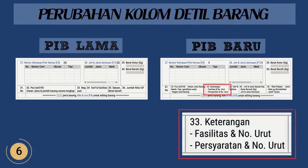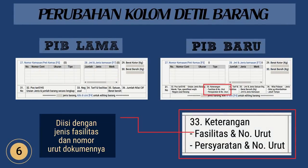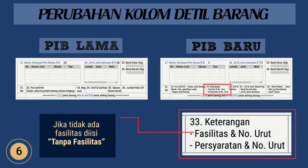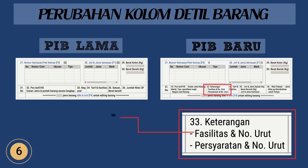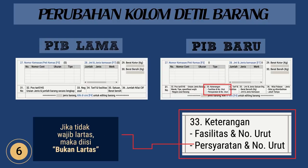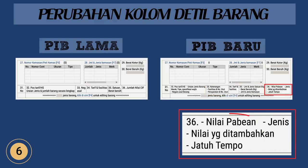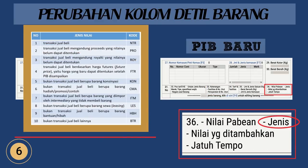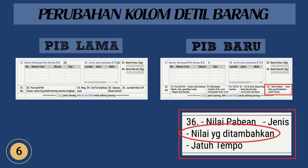Perubahan kolom detail barang: fasilitas dan nomor urut diisi dengan jenis fasilitas dan nomor urut dokumennya; jika tidak ada fasilitas, diisi tanpa fasilitas. Persyaratan dan nomor urut diisi dengan jenis kewajiban lartas atas barang dan nomor urut dokumen pemenuhannya; jika tidak wajib lartas, maka diisi bukan lartas. Nilai pabean diisi dengan jumlah nilai pabean barang. Jenis diisi dengan jenis transaksi yang diberitahukan; nilai yang ditambahkan yaitu perkiraan jumlah nilai yang belum dapat ditentukan; jatuh tempo merupakan waktu nilai yang ditambahkan dapat ditentukan.